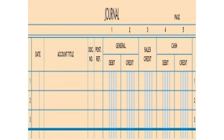We're going to move into the multi-column journal. As you can see here, we have a date column, account title, doc, post reference, general debit, general credit, sales credit, cash debit, and cash credit. We use a multi-column journal because those right-hand columns make it easier since these accounts are commonly used — we don't have to write them out, so we're only going to write one line.